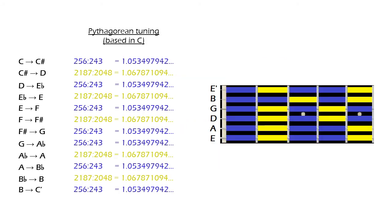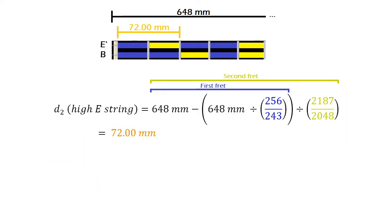In this figure, we observe the blue and yellow ratios placed on the first frets of a guitar. Again, considering a 648mm scale length, this means that for the high E string, the second fret would have to be placed at 72mm from the nut.